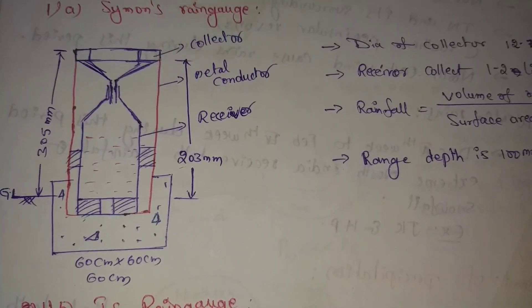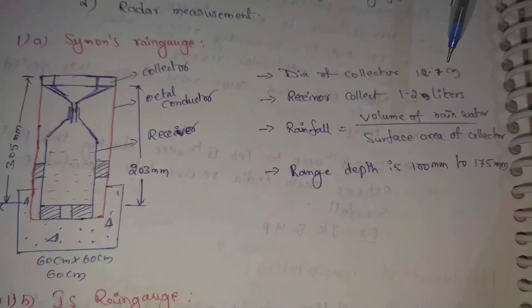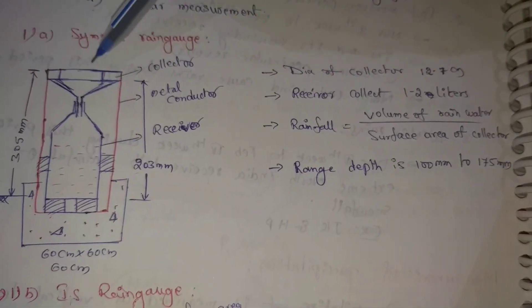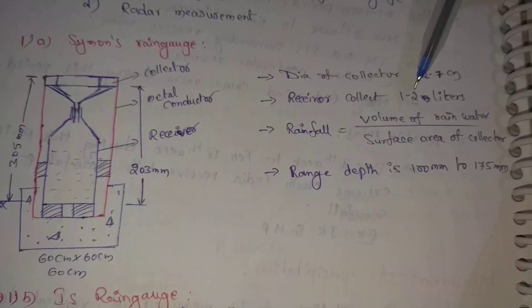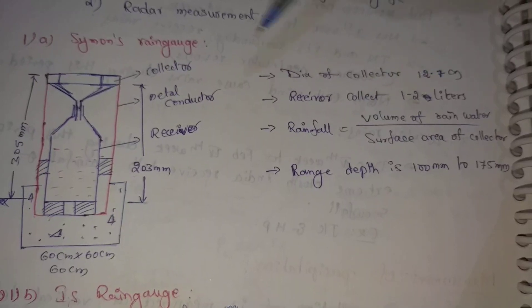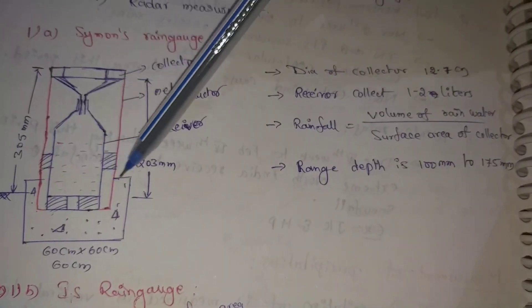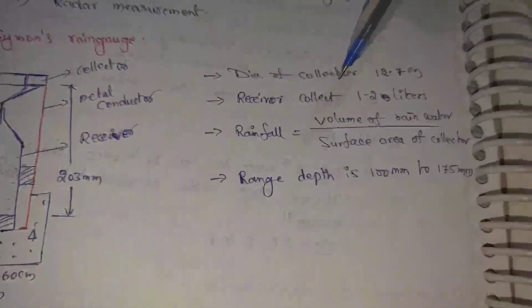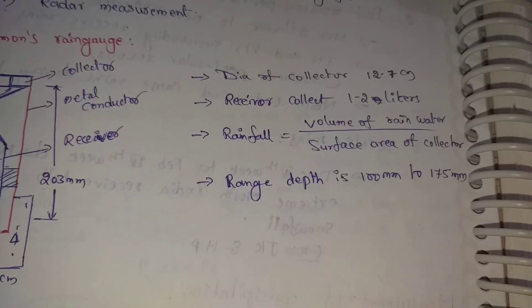The diameter of the collector is 12.7 cm at the top level. The receiver capacity is 1 to 2 liters. There is a series of collectors to collect, and this is the measurement range.